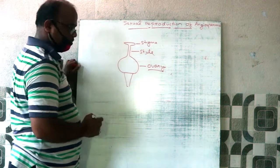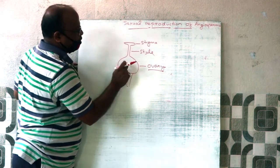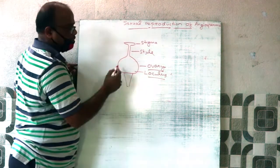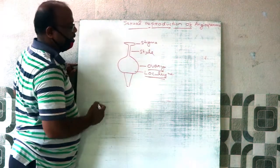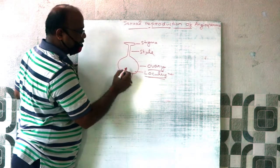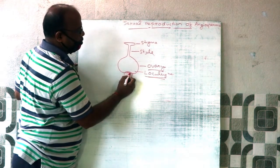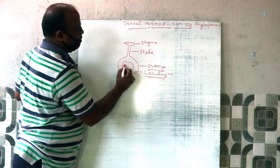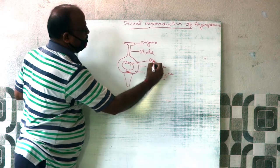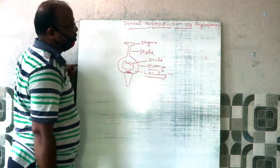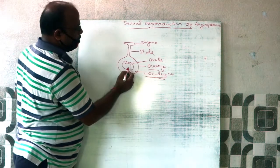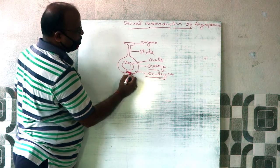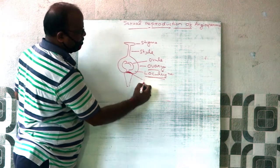The mature Ovary is known as a Fruit. Inside the Ovary, one or more chambers are present. Each chamber is known as a Loculus. Inside each Loculus of the Ovary are found one or more integument-covered Megasporangia, known as Ovules. The Ovule attaches to the Ovary wall by means of a tissue called the Placenta.